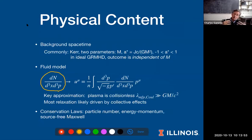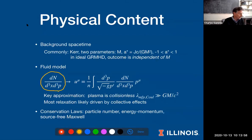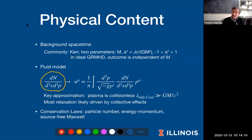Once we've made that approximation, we can write down the governing equations, which are just conservation laws — conservation of particle number, energy and momentum, and then the Maxwell equations, which can be written in the form of conservation laws.